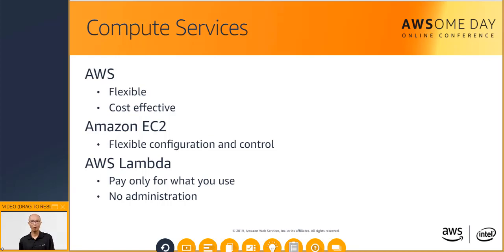For example, say you want to process an uploaded image. You can upload the image to Amazon Simple Storage Service, or S3, which is a service that allows you to store and retrieve any amount of data from anywhere. You can then use an event trigger to launch a Lambda function to process that image without having to have an idle server standing by. Think about the ease of running compute without having to provision and maintain servers — it's like switching on the lights without thinking about how the power is generated.